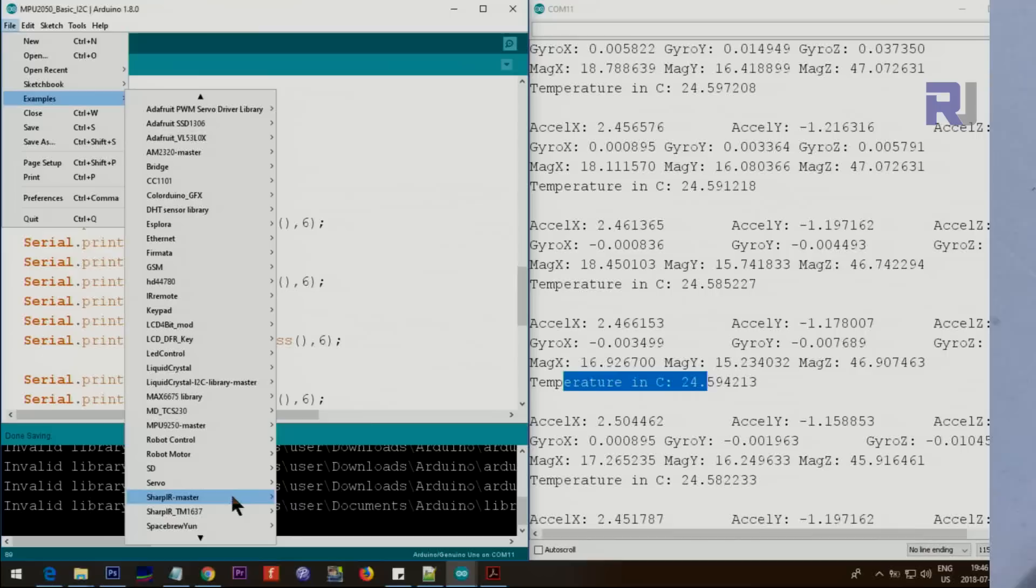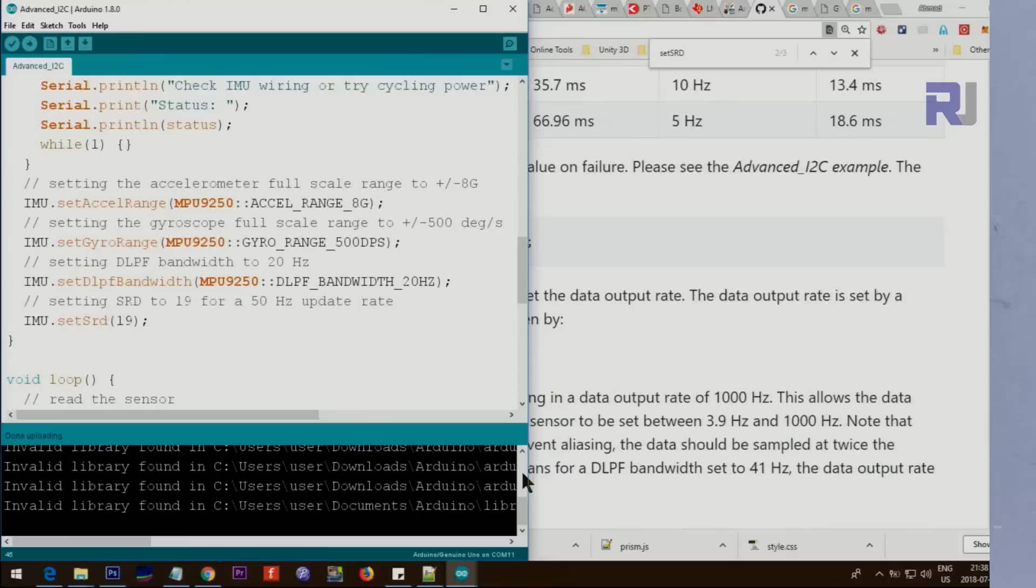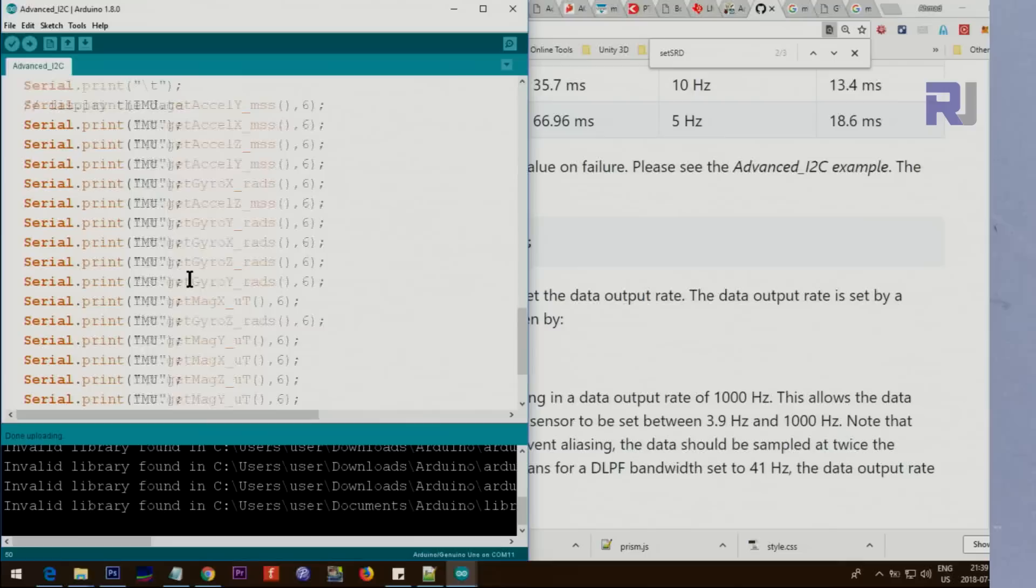Let's open another one - the advanced one. The only difference between the basic and advanced one is that you can set acceleration range plus minus up to 8G. Then you can set the gyro range in degrees per second, plus minus 500. Here we have digital loop filter bandwidth of up to 20 Hertz. You can set different values. Here the signal data rate also can be set. Other than that this section is exactly the same as the other sketch which will print all these values that I just explained.